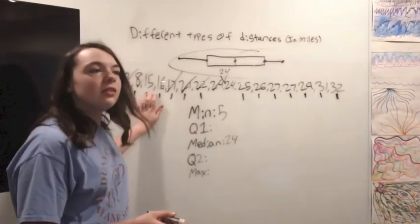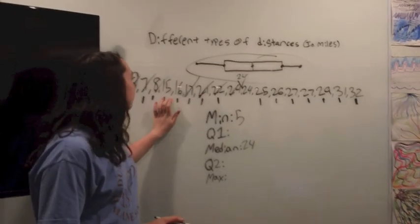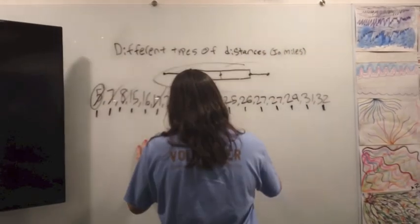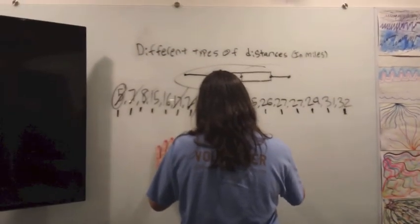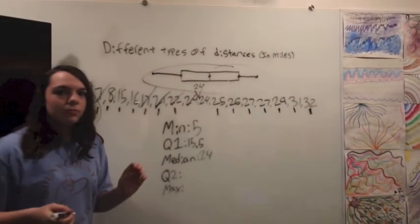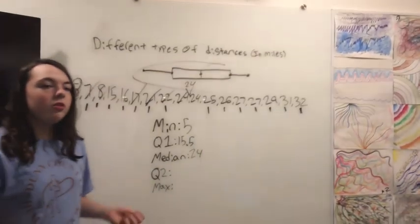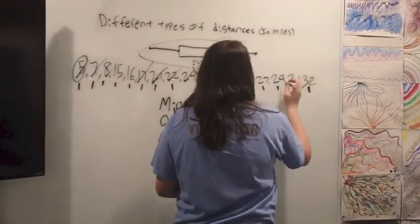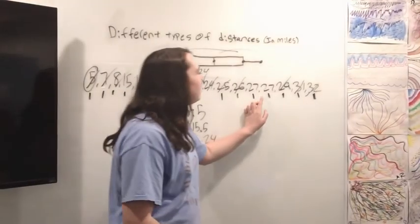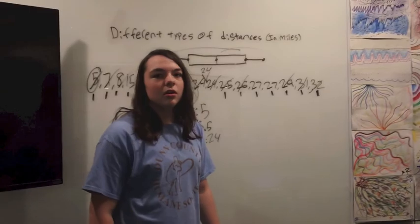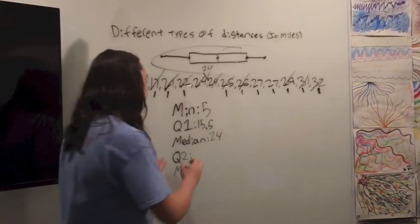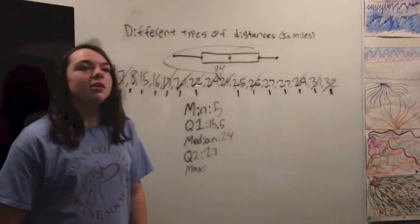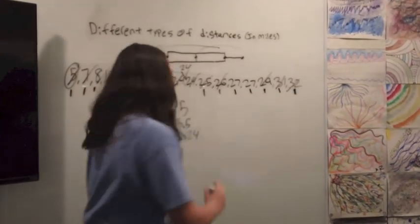So now we need to find the first quartile. So we have 15 and 15, and half in between is 0.5, so it would be 15.5. Okay, so now we need to find the second quartile. We have two 27s which is basically 27 for the quartile. And now we need to find the max, which is the biggest amount, which is 32.